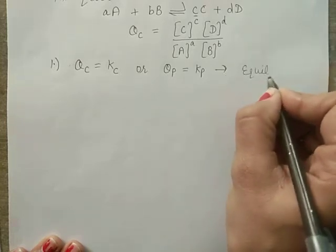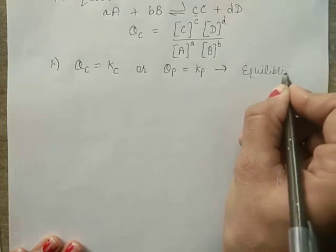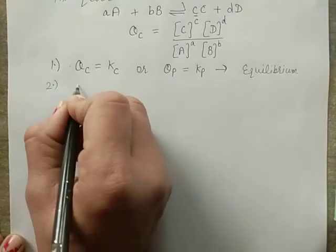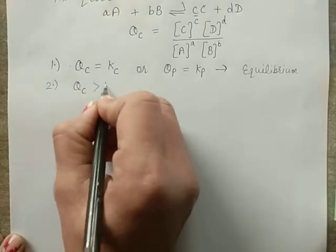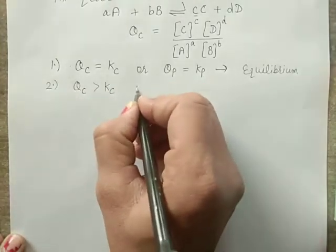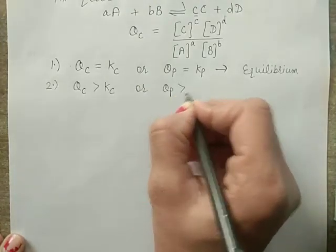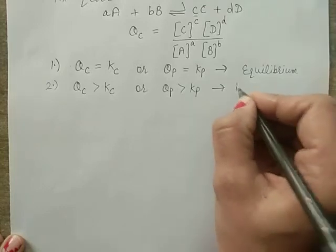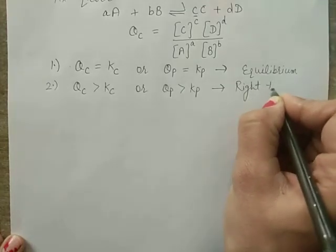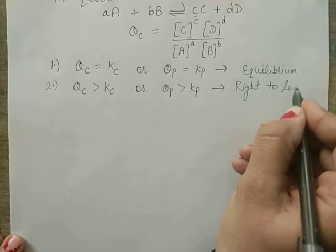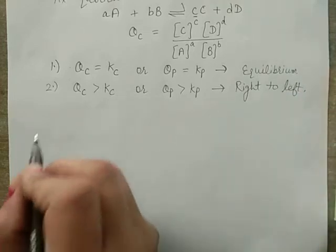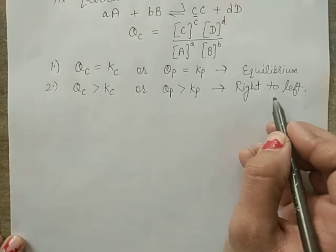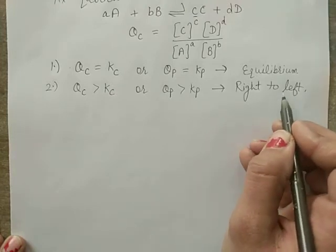Case number 2: If Qc is greater than Kc, or Qp is greater than Kp, it means the reaction moves from right to left — in the backward direction, in the direction of reactants.